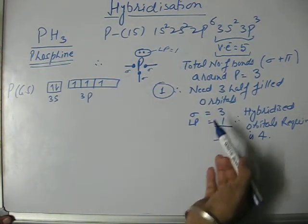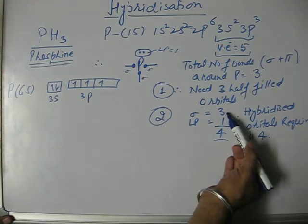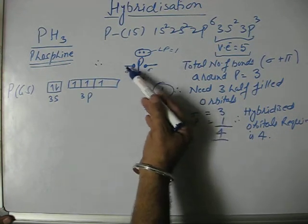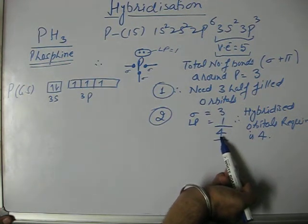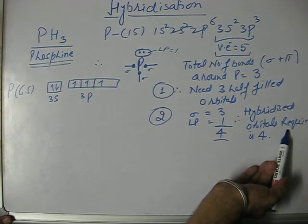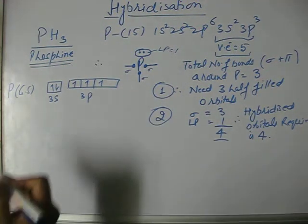To find how many hybridized orbitals we need: three sigma bonds plus one lone pair equals four total. This means four hybridized orbitals will be required around phosphorus.